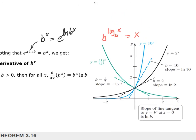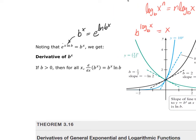We also have this rule that says if I have log base B of X to some N power, that N becomes a multiplier. To get this equivalency, I used those two rules combined. I'm taking my base B to the X, writing it as E raised to the natural log of B times X, and then the X comes down out front as a multiplier.